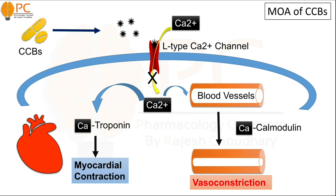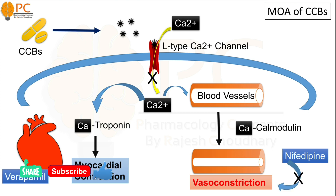So, vasoselective calcium channel blockers like nifedipine inhibit the vasoconstriction effect. And cardioselective calcium channel blockers like verapamil inhibit myocardial contraction. These are the basic mechanisms of the various calcium channel blockers.